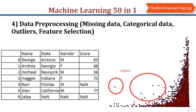The next topic is data preprocessing. In data preprocessing, we deal with missing data, categorical data, outliers, and feature selection. When you load a dataset, there will be a lot of columns with missing data. For example, in column 'score' at row 4, there is a missing value written as NaN — not a number. You cannot fit an algorithm to a dataset with missing values, so first you need to take care of that missing data.